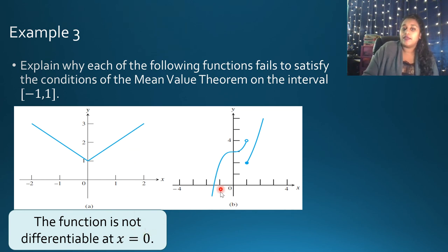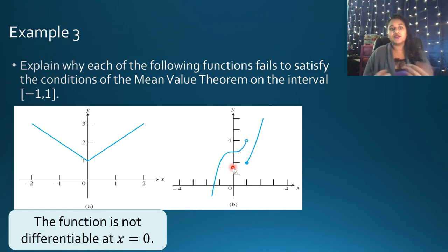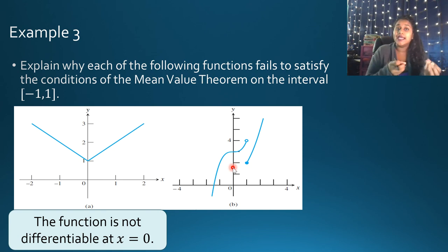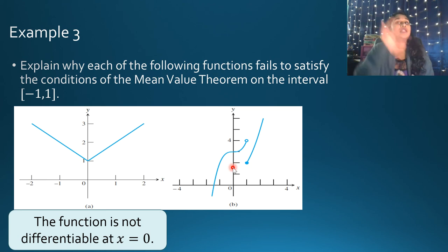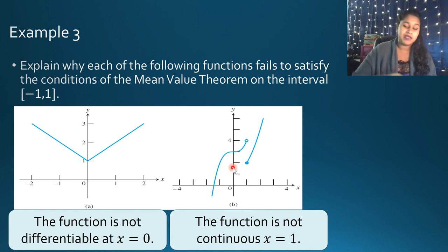What about graph B from -1 to 1? Looking at the first condition — continuity — it is not continuous at X = 1. Some might ask whether the endpoint is included or excluded. Remember, continuity must hold even at the endpoint; it's differentiability that can be relaxed at endpoints. So graph B is not continuous at X = 1, which is why it fails to satisfy the Mean Value Theorem.